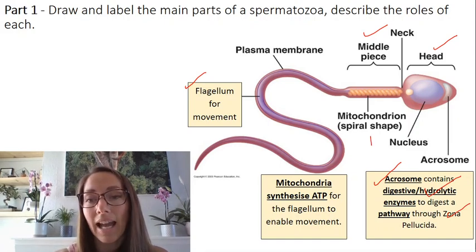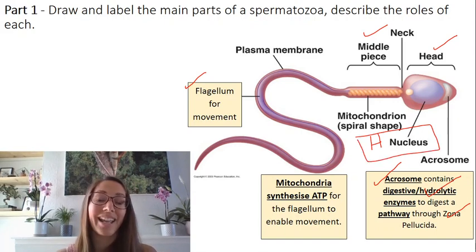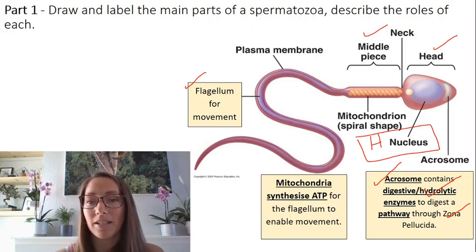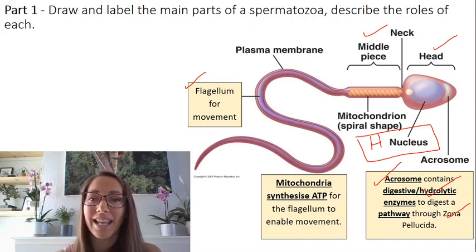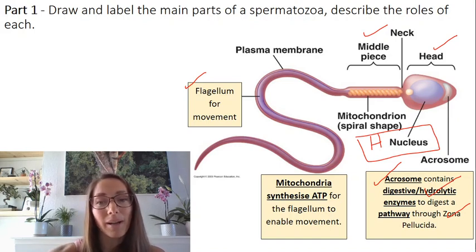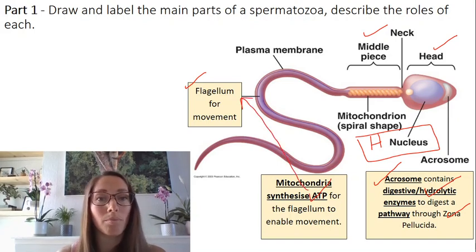We've also got a haploid nucleus. A really good exam tip is to always refer to nuclei in gametes as haploid — just get into the habit of doing that as it will help you pick up marks. In the midsection we've got mitochondria, which synthesize ATP, and that ATP is used by the flagellum for movement.